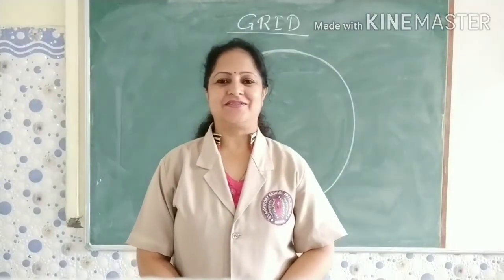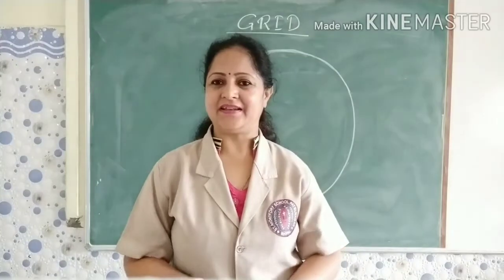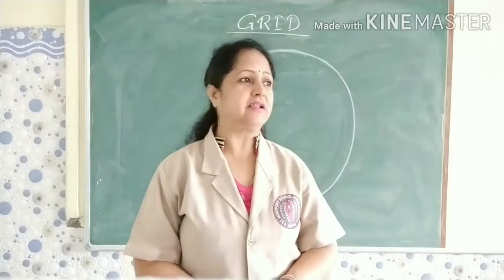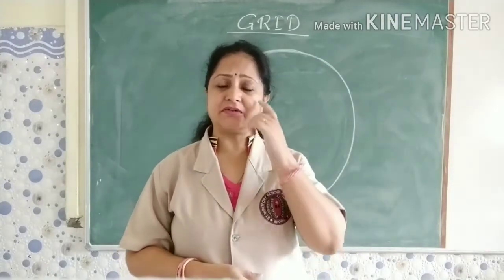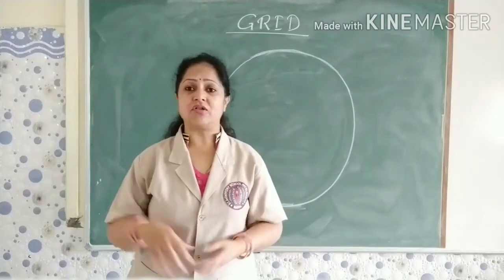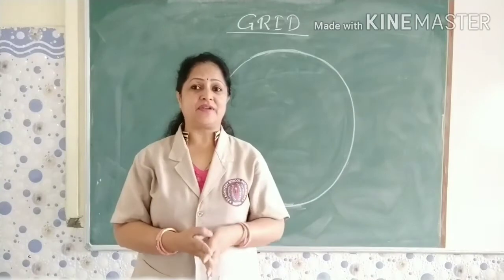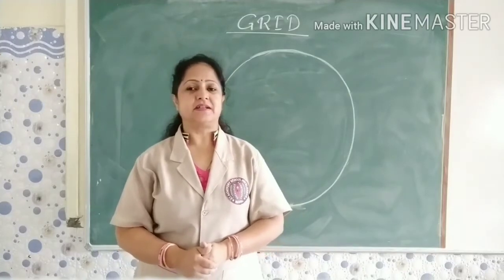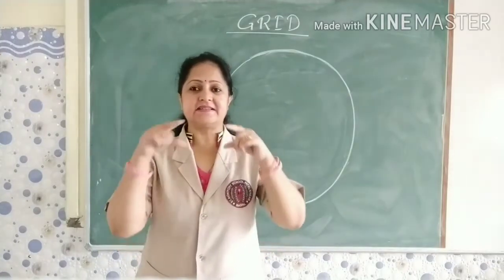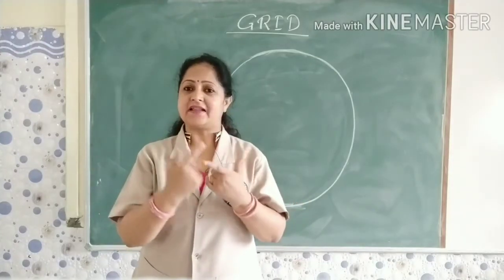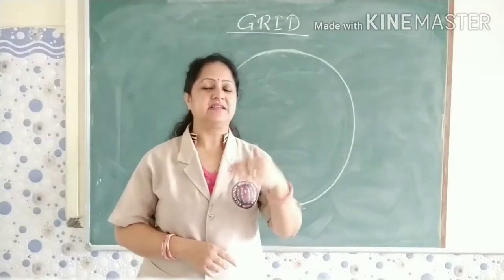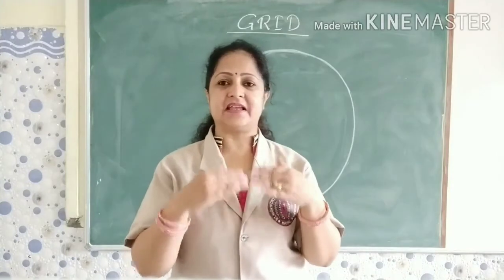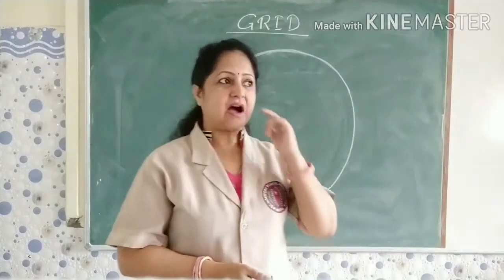Good morning dear children. I am back with my next video on the topic latitudes. So till now I have already explained about latitudes and longitudes. Latitudes are the imaginary lines drawn horizontally on a globe. The total number of latitudes are 180 degrees — 90 in the northern hemisphere and 90 in the southern hemisphere — and all these lines run parallel to each other. The line of reference is the equator, which is 0 degrees.